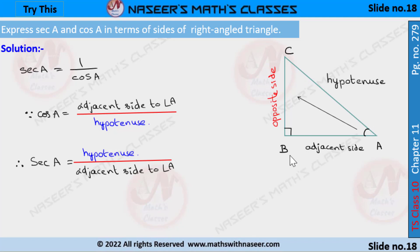With respect to angle A, BC is the opposite side and AB is the adjacent side. We already know that